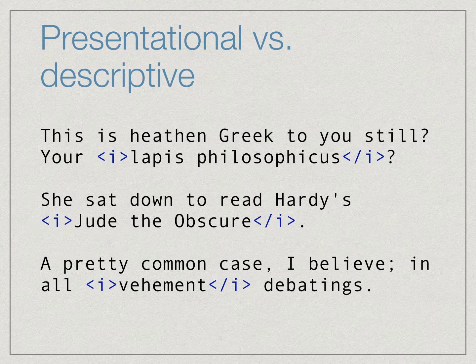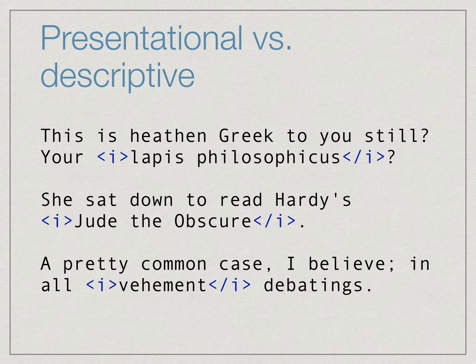Presentational markup is perhaps the easiest to understand. Markup codes are inserted into the text to indicate how a span of text should be formatted in some sort of publishing or presentation platform, such as a web browser. The HTML B and I tags, for bold and italics, are examples of presentational markup. In this example, we see three spans of text that are to be italicized, but we don't know why they receive this special treatment.